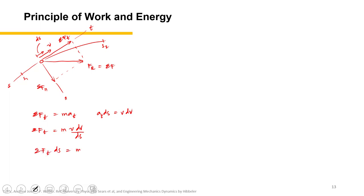Let's transfer ds on the left side, that would be Ft ds equals m v dv. Now let's integrate both sides. For the limits, let's assume S1 and S2 for the distance or displacement, and V1 and V2 for the velocity.